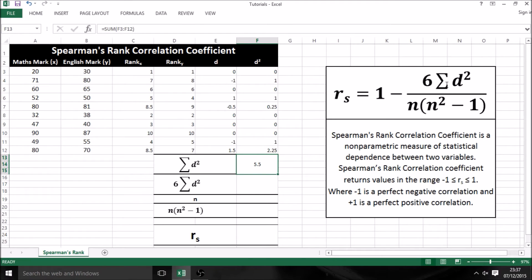Now we need to multiply this value by 6, as the formula requires. So just type in equals, then 6 with an asterisk, and this asterisk is found by pressing shift and then 8, then press enter, and you get a value of 33.